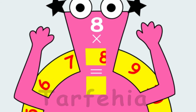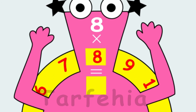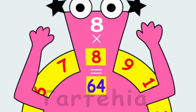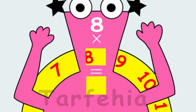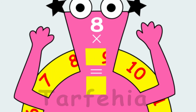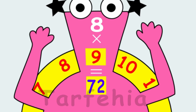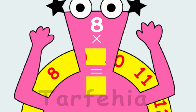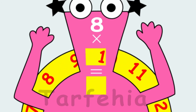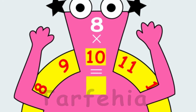8 times 8 equals 64. 8 times 9 equals 72. 8 times 10 equals 80.